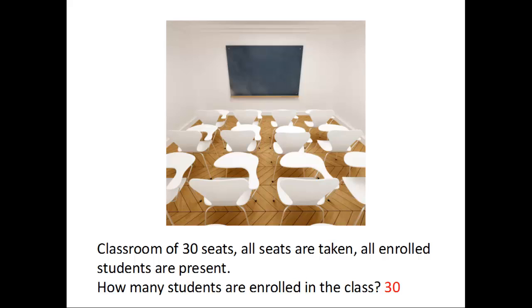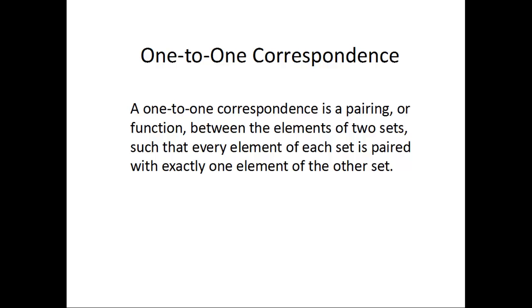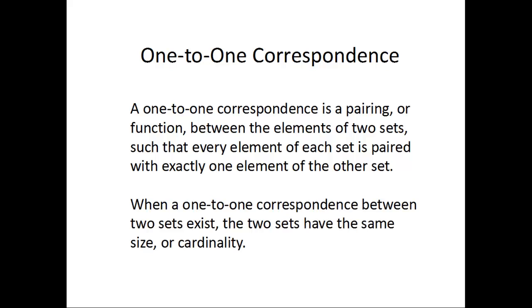This brings us to the idea of one-to-one correspondences. A one-to-one correspondence is a pairing, or a function, between the elements of two sets such that every element of each set is paired with exactly one element of the other set. When this happens, we know that the two sets have the same size of cardinality.